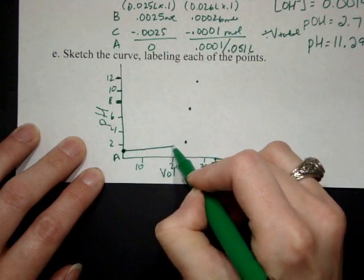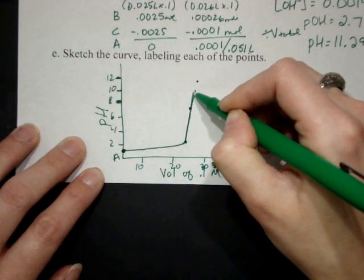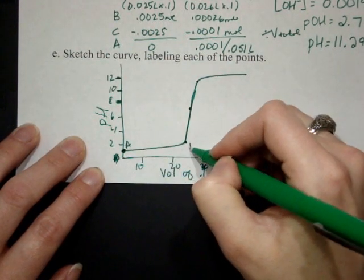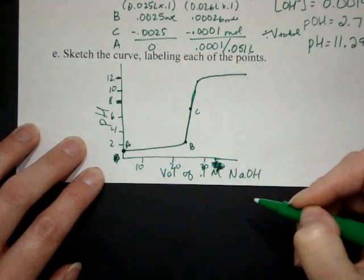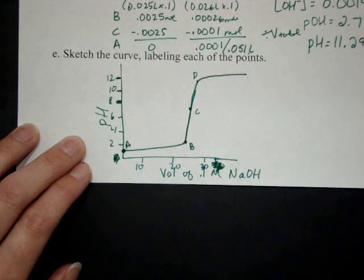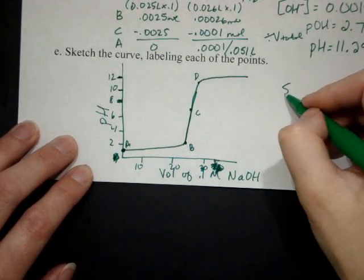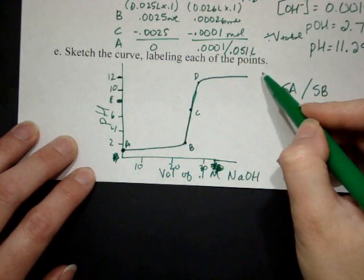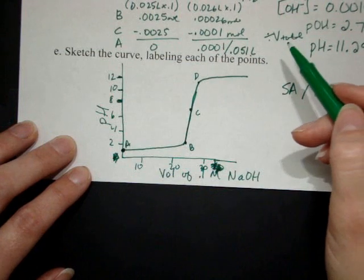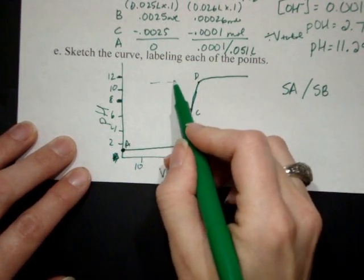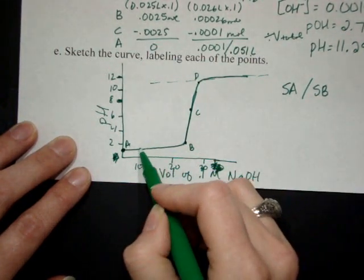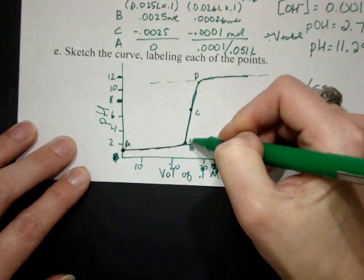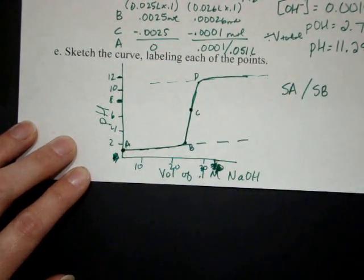So our curve pretty much is flat at the bottom. And then it would continue on here if we added on. So point A was right here initially. Point B right before the equivalence point. Point C at the equivalence point. And then point D after the equivalence point. And that's what a strong acid, strong base curve generally looks like. You're pretty well flat. You go straight up. You're pretty well flat. But when you want to find the equivalence point, if you don't have a pH meter, the way that you do that is you use a ruler, and you essentially draw a straight line. I know I'm not using a ruler, but you'll understand. During across each of the straight portions, and then you measure the distance from the top line to the bottom line, and halfway between represents your equivalence point.